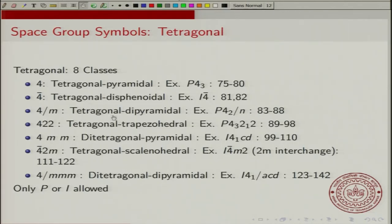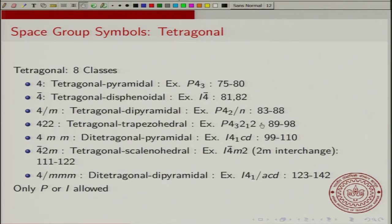The 4/M tetragonal dipyramidal class has a total of 6 space groups. One example is P4₂/N, where the fourfold axis is actually a 4₂ screw axis and the mirror is a diagonal glide. For the 422 tetragonal trapezohedral crystal class, there are 10 space groups, with an example having a 4₃, 2₁, and 2.